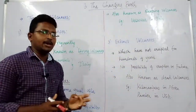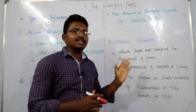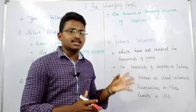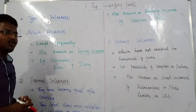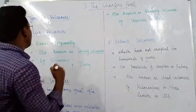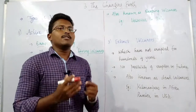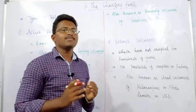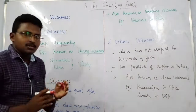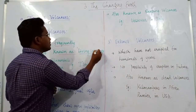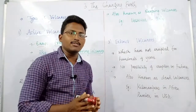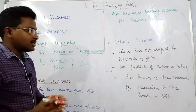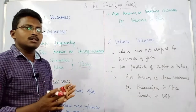There are mainly three types of volcanoes: active volcanoes, dormant volcanoes, and extinct volcanoes. Active volcanoes are those that erupt frequently — we may not know exactly when they will occur, but they occur very often. Because of their continuity, they are also known as living volcanoes. Examples of active volcanoes include Stromboli and Etna, both located in Italy.